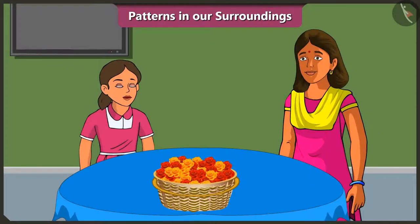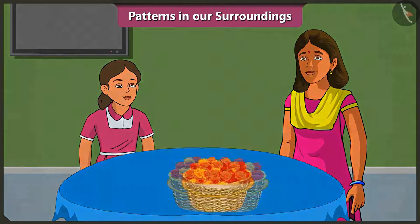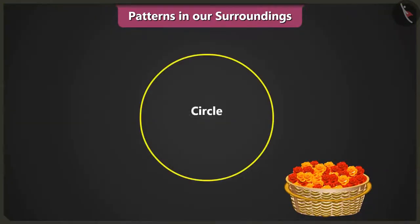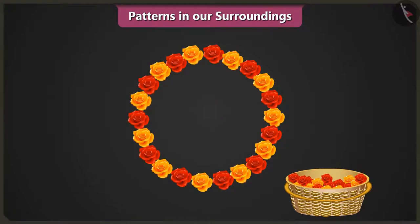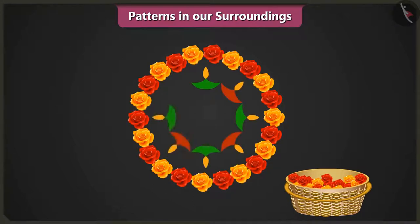Mummy, how will we make the rangoli? Vinny, this Diwali we will make a rangoli pattern with flowers. Come, let me teach you. First, we will draw a circle like this. On the circle, we will place one red flower and one yellow flower like this. Vinny, can you tell me what we will be doing next? We will repeat the flower pattern. Well done, Vinny. After we have completed the pattern, we will make a diya like this. We will complete the diya pattern inside the circle.